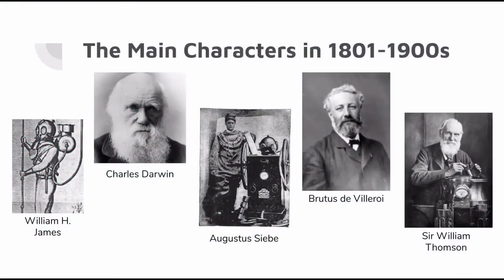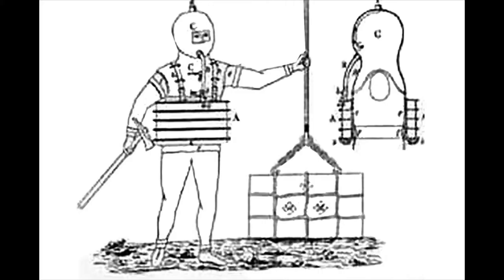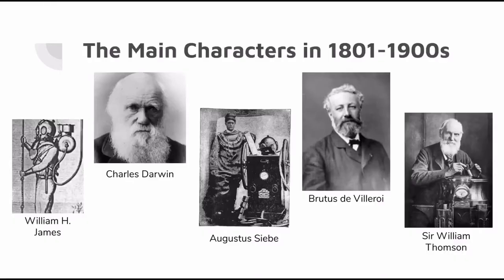Main characters in the 1800s to 1900s. First there was William H. James, who designed an underwater breathing apparatus, otherwise known as scuba, in 1825. The design consists of a helmet, a supply of compressed air, and a cast iron belt which was fastened around the waist. It allowed divers to stay underwater for up to an hour.